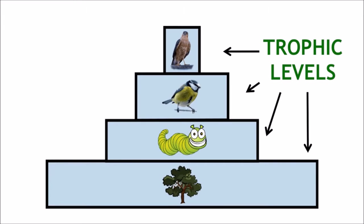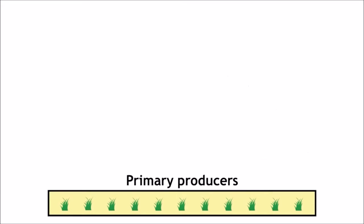So how does that work? Well, the bottom of the pyramid represents the primary producers, the first trophic level.